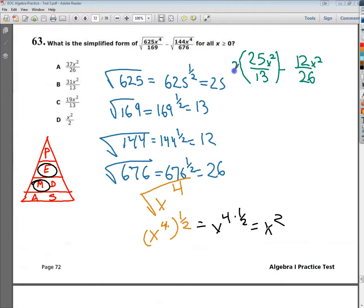I need to multiply everything by 2, so the top and the bottom, so I end up with 50x squared over 26 minus 12x squared over 26. These are like terms. They have a common denominator, so I do 50 minus 12, which is 38x squared over 26.